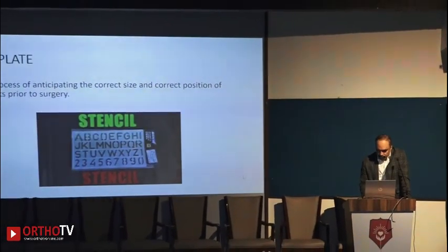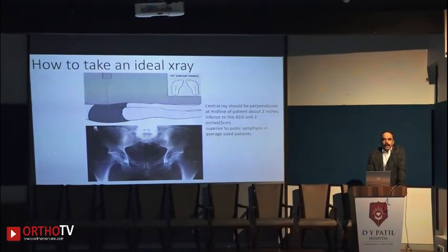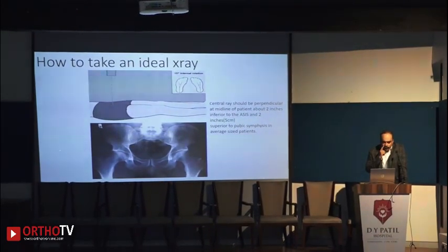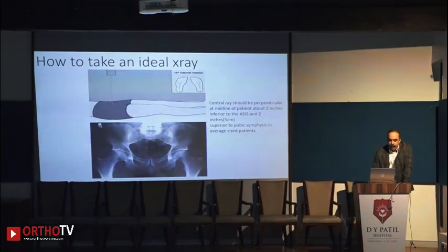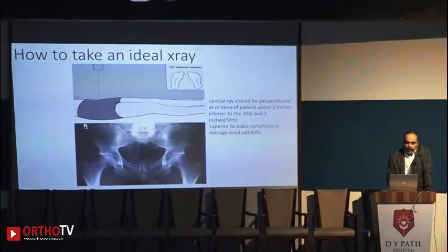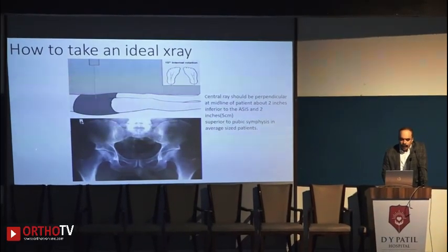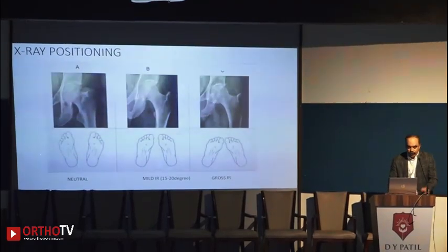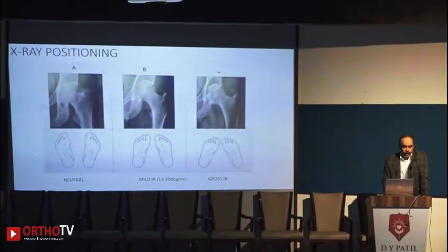Before templating, it is wise to know how to take an ideal X-ray for the hip AP view. The central ray should be perpendicular to the midline of the patient, two inches inferior to the anterior superior iliac spine, and two inches superior to the pubic symphysis in an average size patient. Look at these three X-rays: one in neutral,